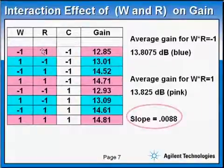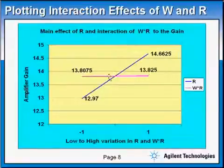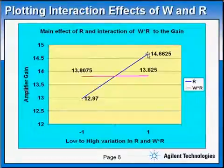So for the interaction you do the same thing. You find the average gain for W R equal minus one and the average gain for W R equal plus one. And you find the slope of the change in gain. And we notice the slope is very small. So the interaction effect between W and R is not really contributing much to the variation in gain. And if we plot it on the next page, notice in pink this is almost a horizontal line. It really has no effect in the gain, but the resistor is the dominant effect here for the gain.